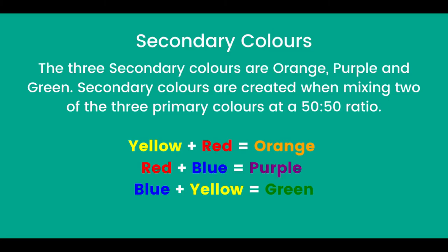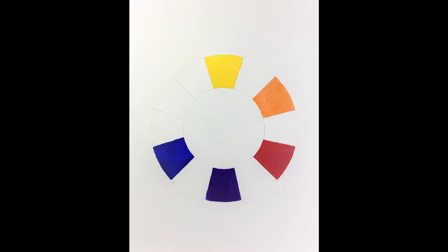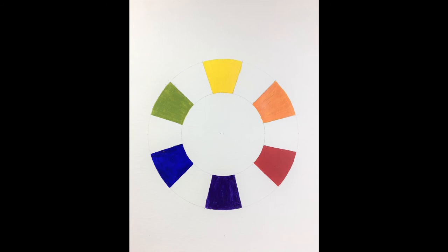There are three secondary colours: orange, purple and green. Secondary colours are created when mixing two of the three primary colours at a 50-50 ratio. Yellow and red equals orange, red and blue is purple, blue and yellow is green.